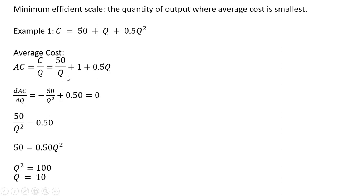Once we have average cost, we want to find where it is minimized. So to do that, we will take the derivative of average cost with respect to output and set that derivative result equal to 0.